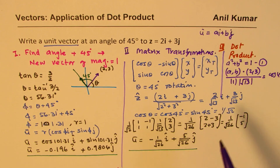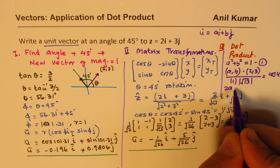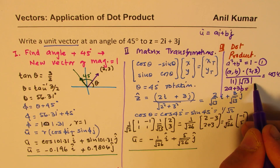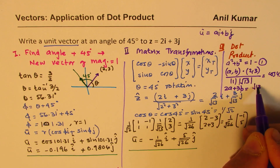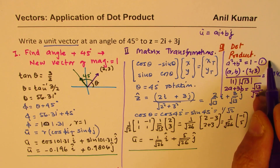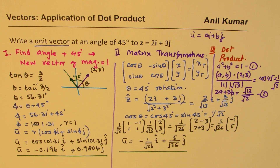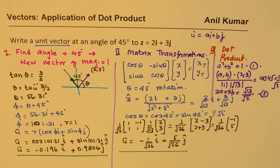From the dot product equation we get: 2a + 3b = √13/√2. Solving this system of two equations — a² + b² = 1 and 2a + 3b = √13/√2 — you can find the values of a and b. That's the third method you can explore to get the result. I hope you find this interesting. Feel free to write your comments and share your views. Thanks for watching and all the best.